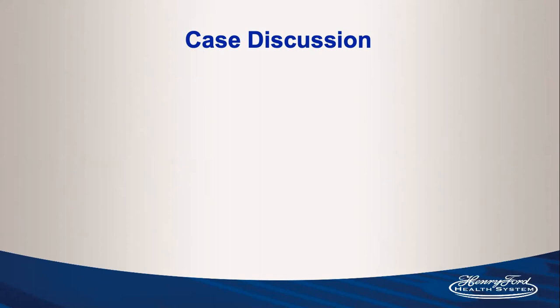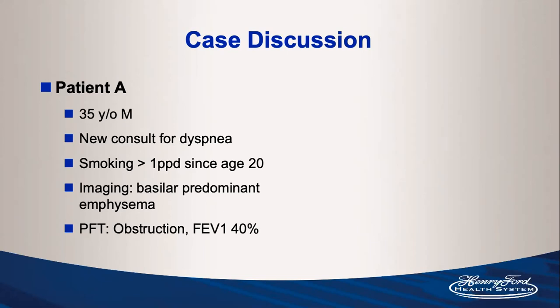By introducing a couple of cases it may be easier to apply throughout the presentation. Patient A is a 35-year-old male, a new consult for dyspnea. He's been smoking about a pack a day since age 20 and has basilar predominant emphysema, obstruction on PFTs, and an FEV1 of 40% predicted. Keep in mind your thought process about diagnosing this patient, treatment options, and other things to look for in his history regarding alpha-1 antitrypsin deficiency.